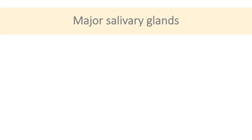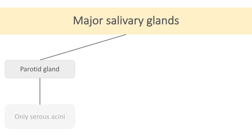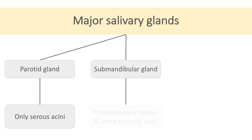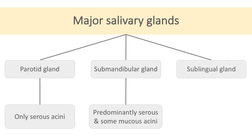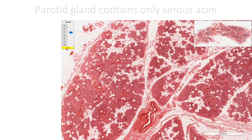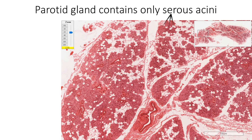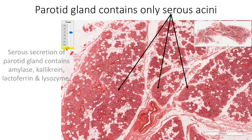Major salivary glands are: the parotid gland, which is made up of only serous acini; the submandibular salivary gland, which is made up of predominantly serous acini with few mucous and mixed acini; and the sublingual gland, which is made up of mainly mucous acini. The parotid gland contains only serous acini, and its serous secretions contain amylase, kallikrein, lactoferrin, and lysozyme.